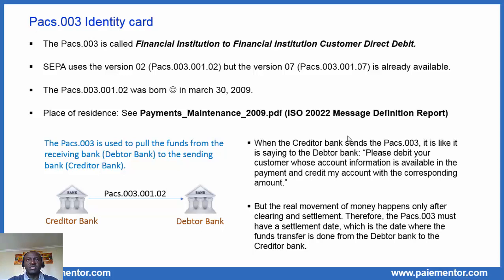The Pax3 message is therefore used to pull the funds from the receiving bank to the sending bank. When the creditor bank sends the Pax3, it is like saying to the debtor bank: please debit your customer whose account information is available in the payment and credit my account with the corresponding amount. But the real movement of money happens only after clearing and settlement. Therefore, the Pax3 must have a settlement date — it is the date where the funds transfer is done from the debtor bank to the creditor bank.